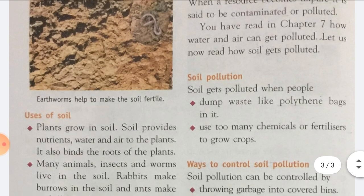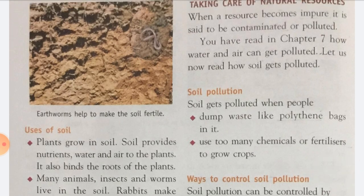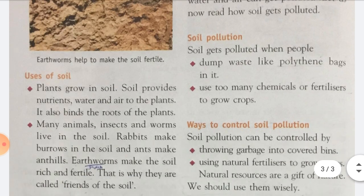Next are the uses of soil. Plants grow in soil. Soil provides nutrients, water and air to the plants. It also binds the roots of the plants. Soil mein kya grow karte hain? Plants. Many animals, insects and worms live in the soil. Rabbits make burrows in the soil and ants make ant hills. Earthworms make the soil rich and fertile. Soil ko kya banati hain? Rich and fertile. Fertile means उपजाऊ. That is why earthworms are called friends of the soil.